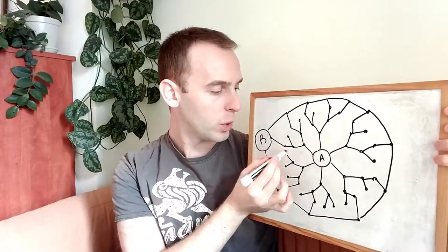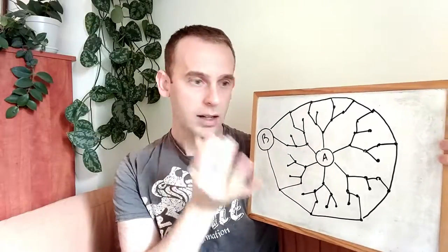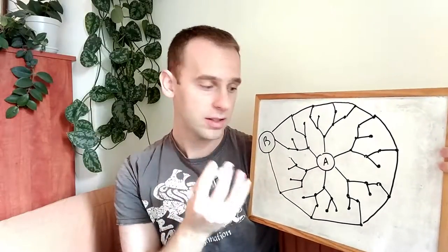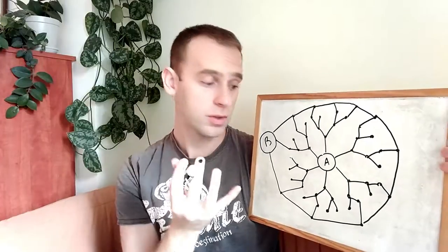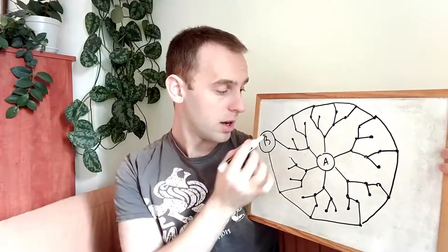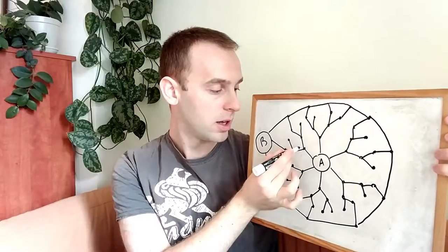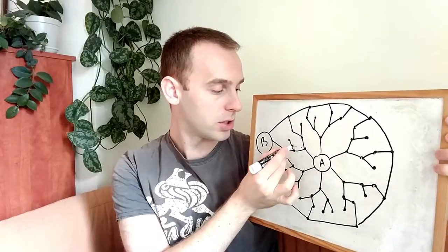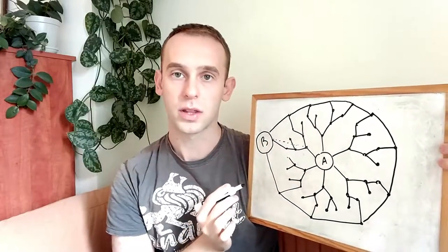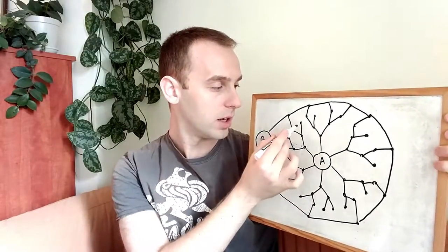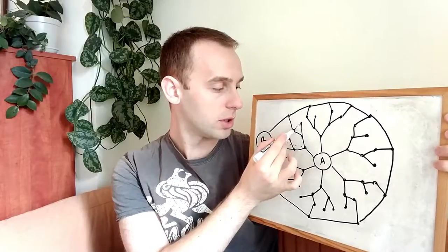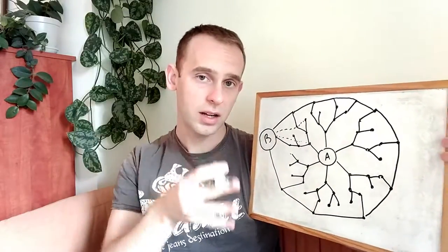When we know this information, we can calculate the potential minimal distance between those points. For example, the minimal potential distance between a given node and node B is the air distance — the straight line between the node and the end point.